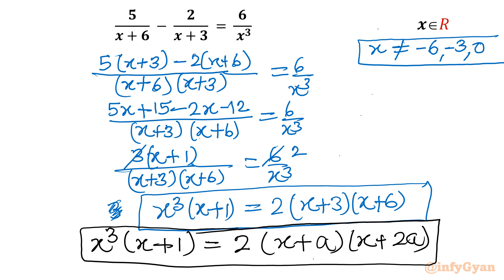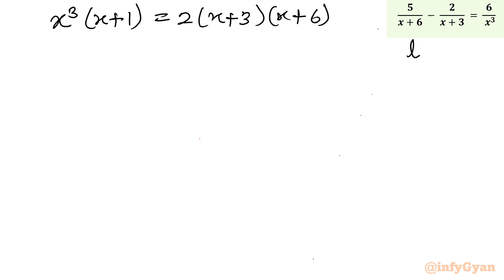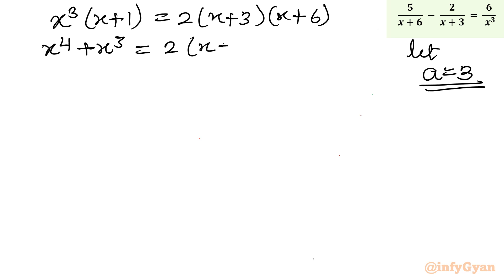Always remember: when the equation is in this format, we have to assume the constant 3 as a. So let us consider here 3 as a. Let me write our equation once: x³(x+1) equal to 2 times (x+3)(x+6). Now I will let a equal to 3. So our equation becomes x⁴ + x³ equal to 2(x+a)(x+2a). Once a is 3, then 2a will be 6. My objective is to frame a quadratic in a.